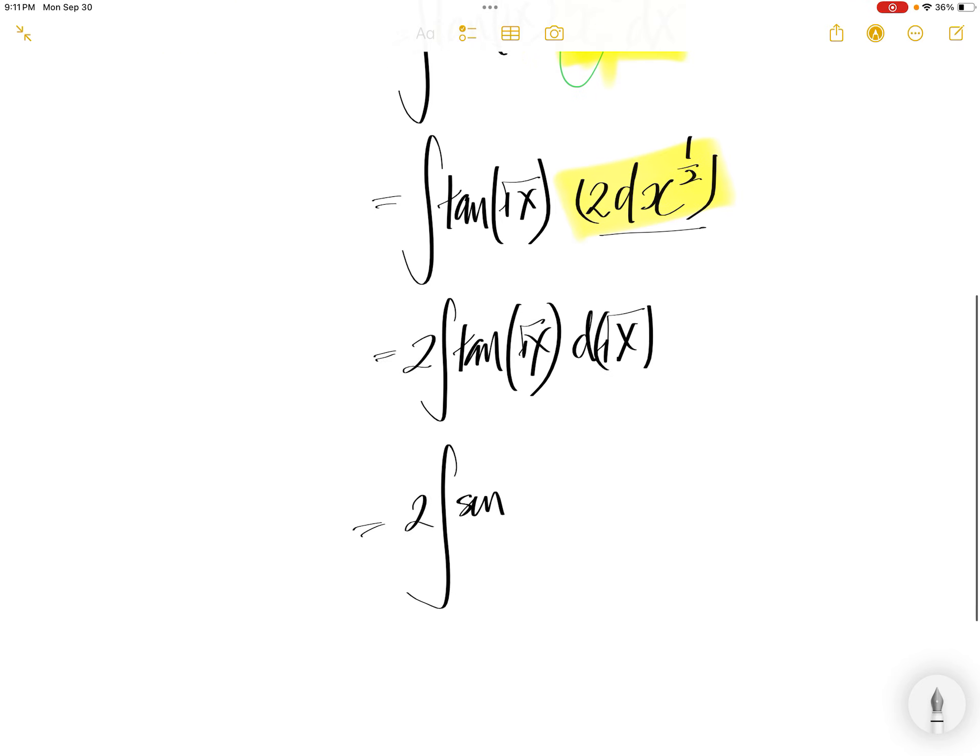Now, the tangent we can write as sine square root x over cosine square root x, d square root x.